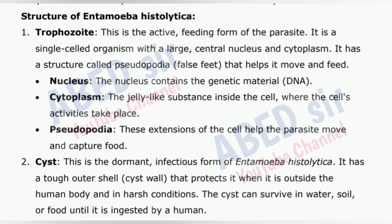Structure of Entamoeba histolytica: 1. Trophozoite — This is the active, feeding form of the parasite. It is a single-celled organism with a large central nucleus and cytoplasm. It has a structure called pseudopodia (false feet) that helps it move and feed. The nucleus contains the genetic material, DNA. The cytoplasm is the jelly-like substance inside the cell where the cell's activities take place. Pseudopodia are extensions of the cell that help the parasite move and capture food. 2. Cyst — This is the dormant, infectious form of Entamoeba histolytica. It has a tough outer shell, the cyst wall, that protects it when it is outside the human body and in harsh conditions. The cyst can survive in water, soil or food until it is ingested by a human.